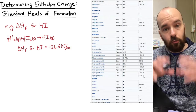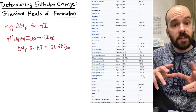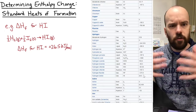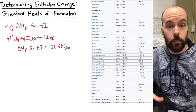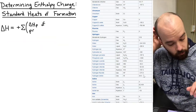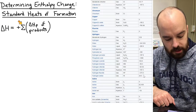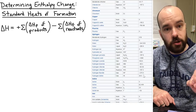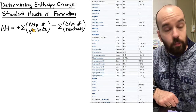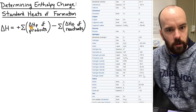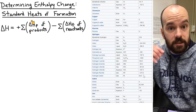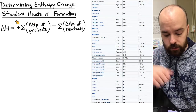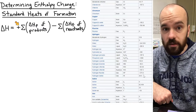Now let's use heats of formation data to determine the enthalpy change for a target reaction. The formula is: ΔH_rxn = Σ ΔHf°(products) − Σ ΔHf°(reactants). The products in any reaction are being formed, which correlates exactly with their heats of formation, so we keep the sign — negative stays negative, positive stays positive.